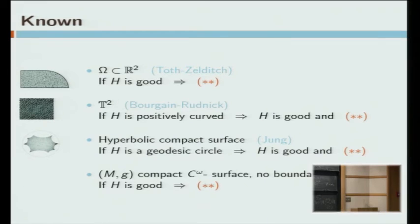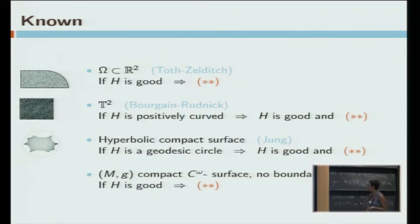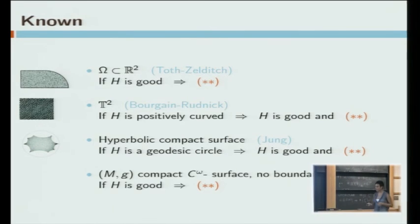The upper bound is sharp. That's the best you can hope for. Are there any lower bounds? Yes, there are lower bounds on the torus. They are much harder to get. Bourgain and Rudnick get a lower bound if the curve h is strictly curved of the form lambda to the 1 minus epsilon. Yes, they are much harder to get. On the flat torus.